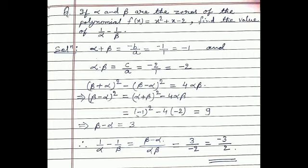Now, 1/α - 1/β: taking αβ as LCM, the numerator is β - α, which we calculated as 3. The denominator is αβ = -2. Therefore 1/α - 1/β = 3/(-2) = -3/2.